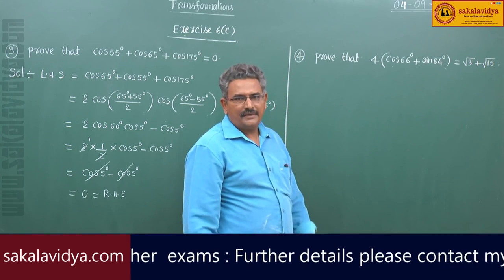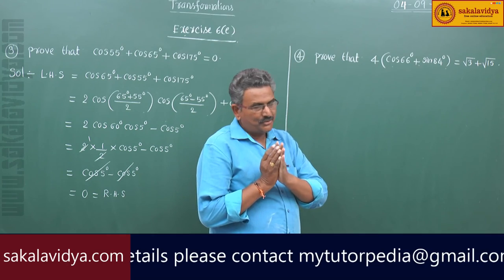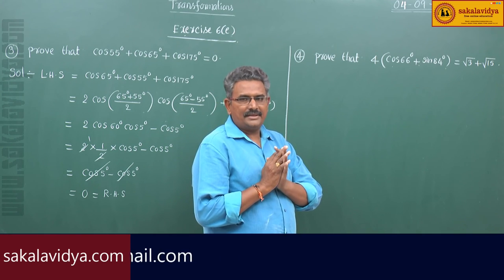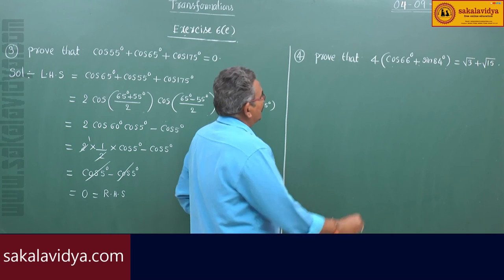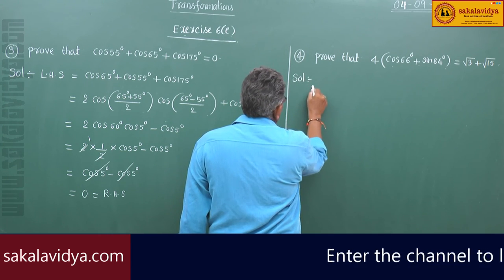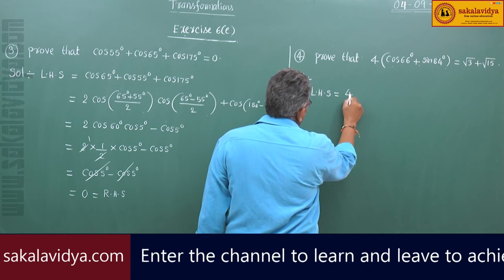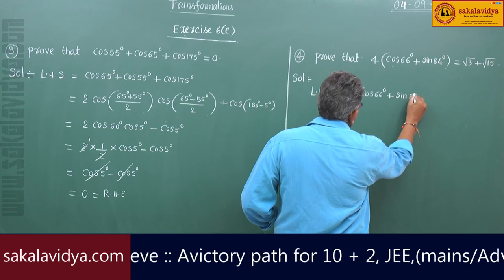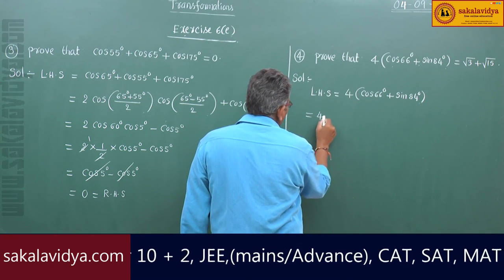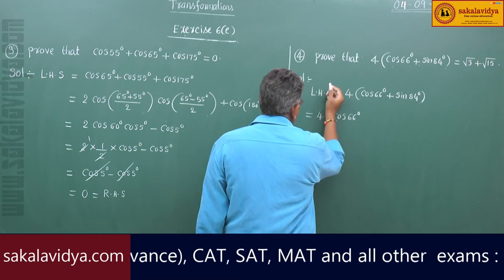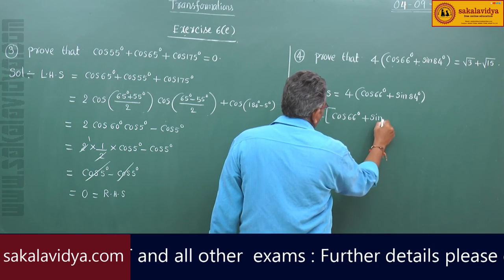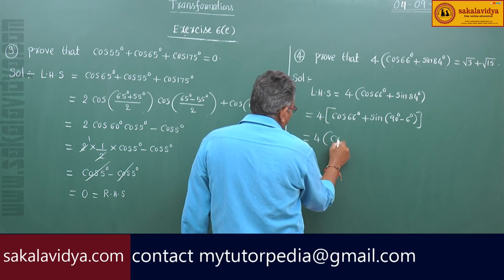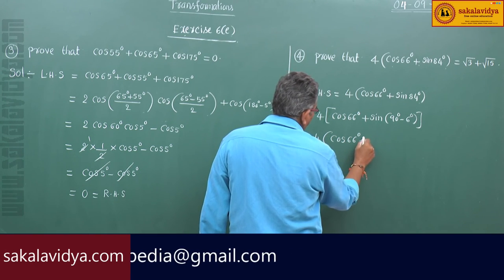Here 84° is close to 90°, and we can write it as 90° - 6°. So the left hand side becomes 4 times cos66° plus sin(90° - 6°), which equals 4 times cos66° plus cos6°.